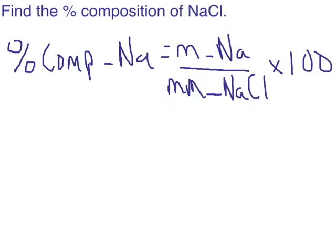Okay, so here is how you would set up the problem. The percent composition of sodium is equal to the mass of sodium divided by the molar mass of sodium chloride. And then, of course, to get a percentage, we always multiply by 100.